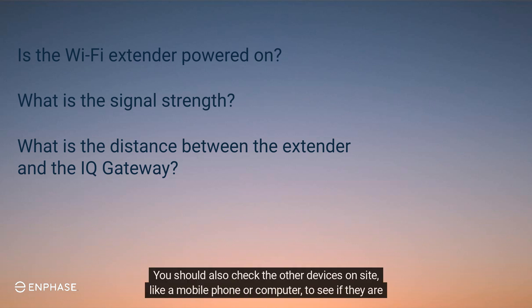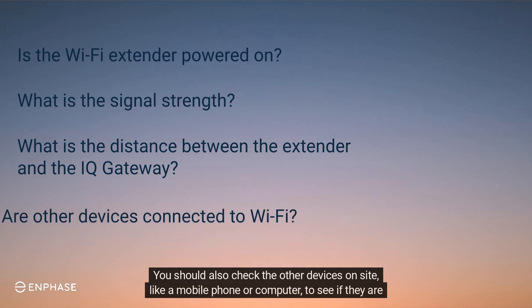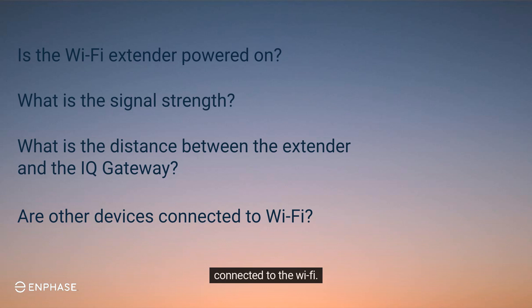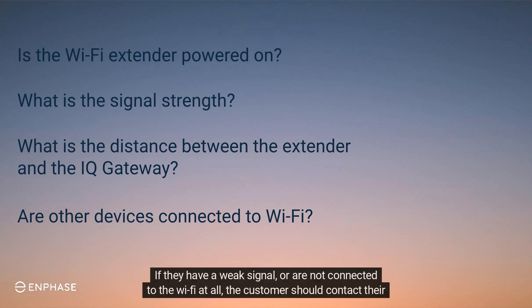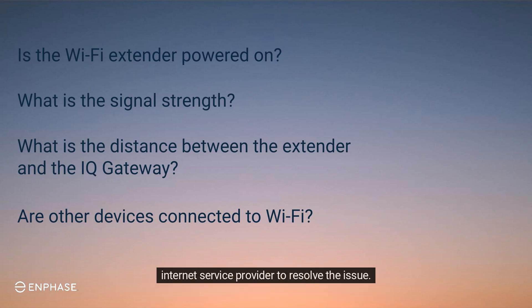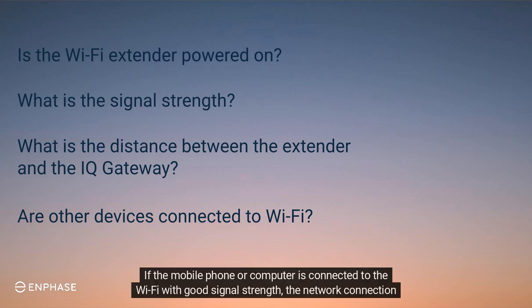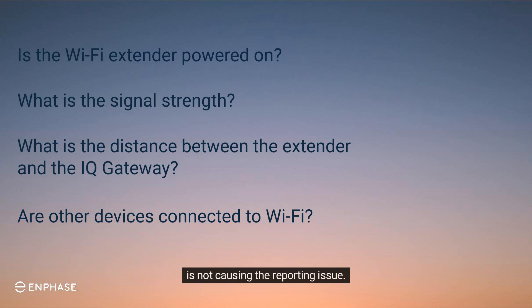You should also check the other devices on site, like a mobile phone or computer, to see if they are connected to the Wi-Fi. If they have a weak signal or are not connected to the Wi-Fi at all, the customer should contact their internet service provider to resolve the issue. If the mobile phone or computer is connected to the Wi-Fi with good signal strength, the network connection is not causing the reporting issue.